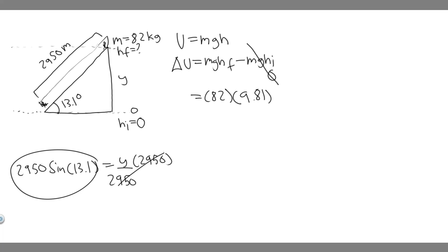And so this is basically going to be their height, 2,950 times the sine of 13.1. So now we know the final height. We can just plug it in. So what you want to do now is 82 times 9.81 and then multiply it by 2,950 times the sine of 13.1. Make sure you're in degrees when you do this. And when you do it, you're going to get 537852.3919.